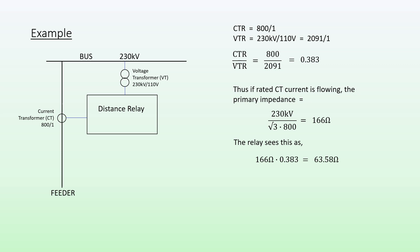Note in this example that the secondary impedance is approximately one-third of the primary impedance. That is simply because our CT ratio over VT ratio constant is close to a third as well. Of course, this will differ from one application to the next.